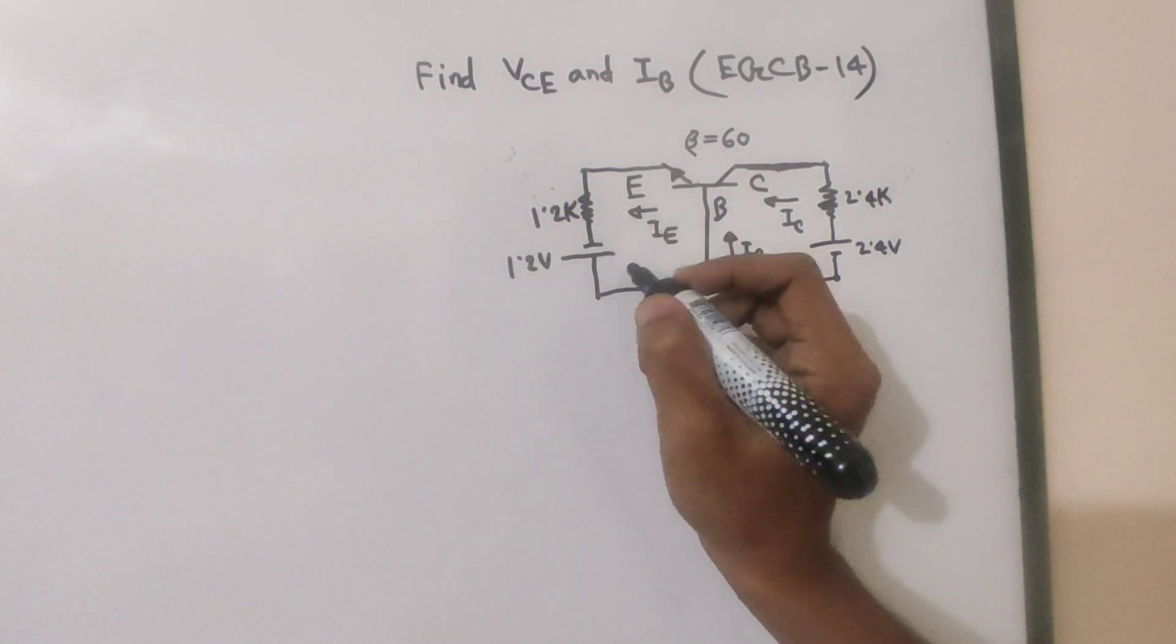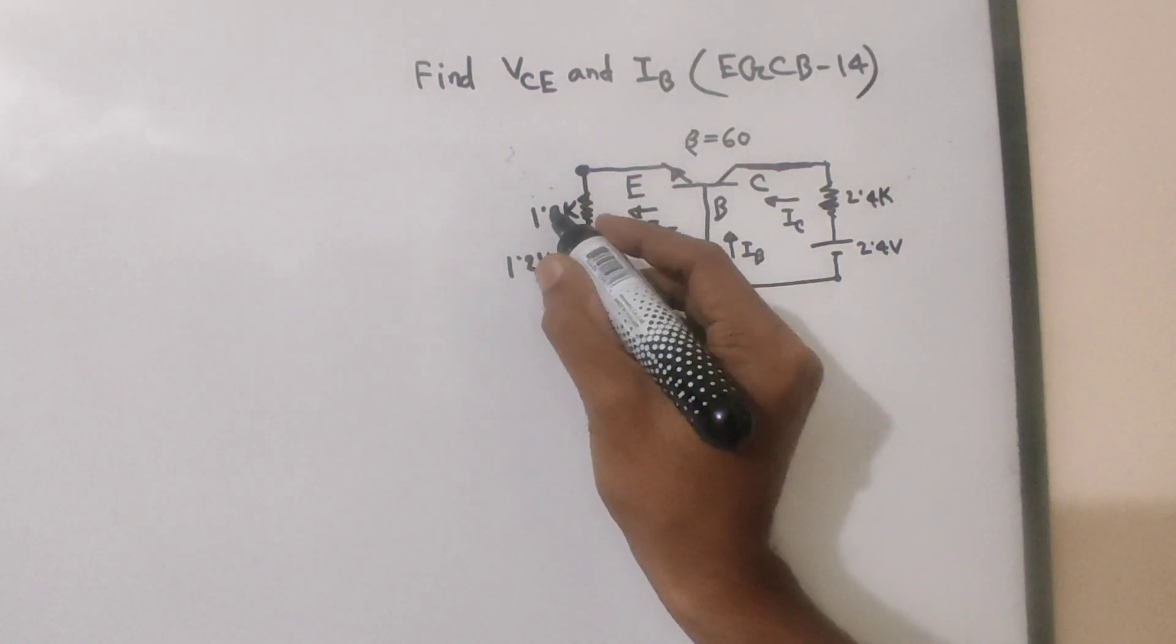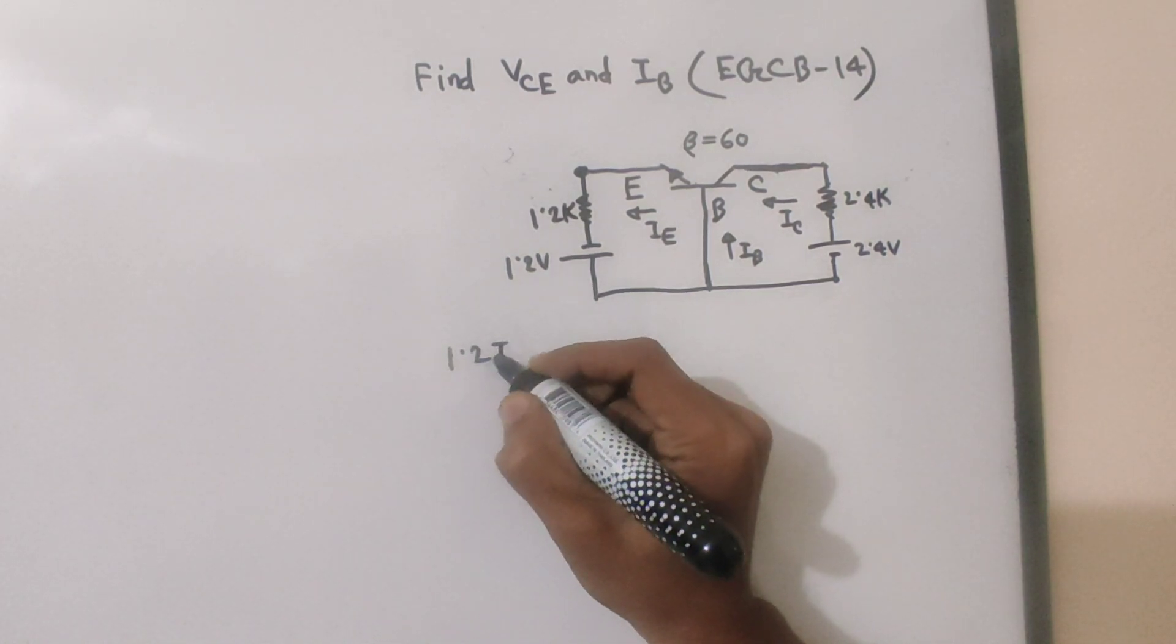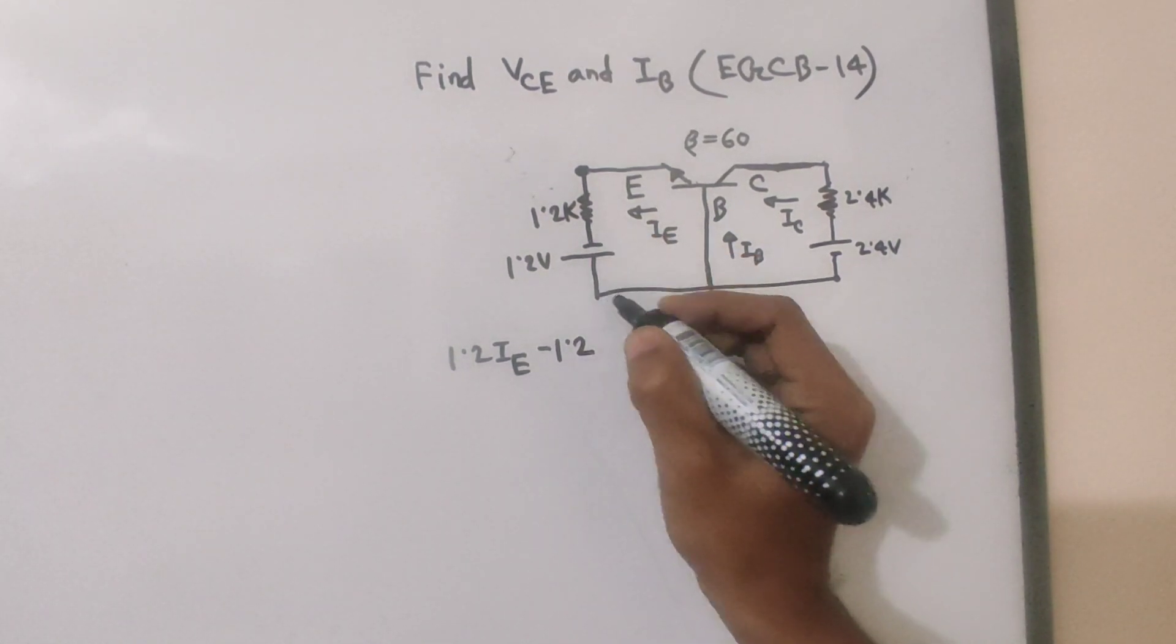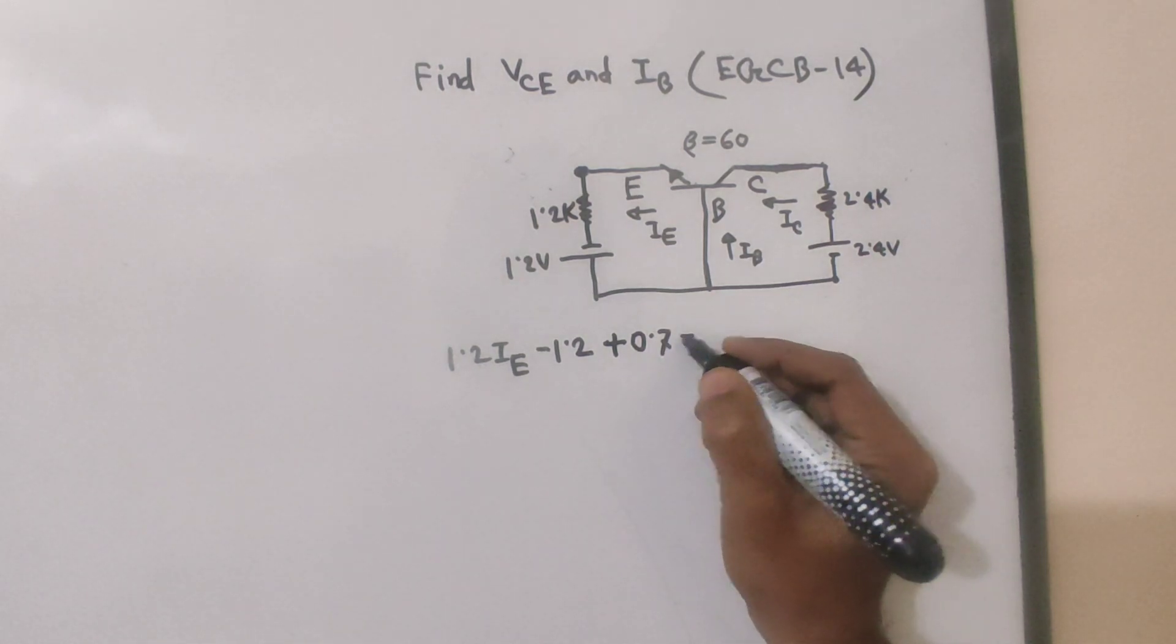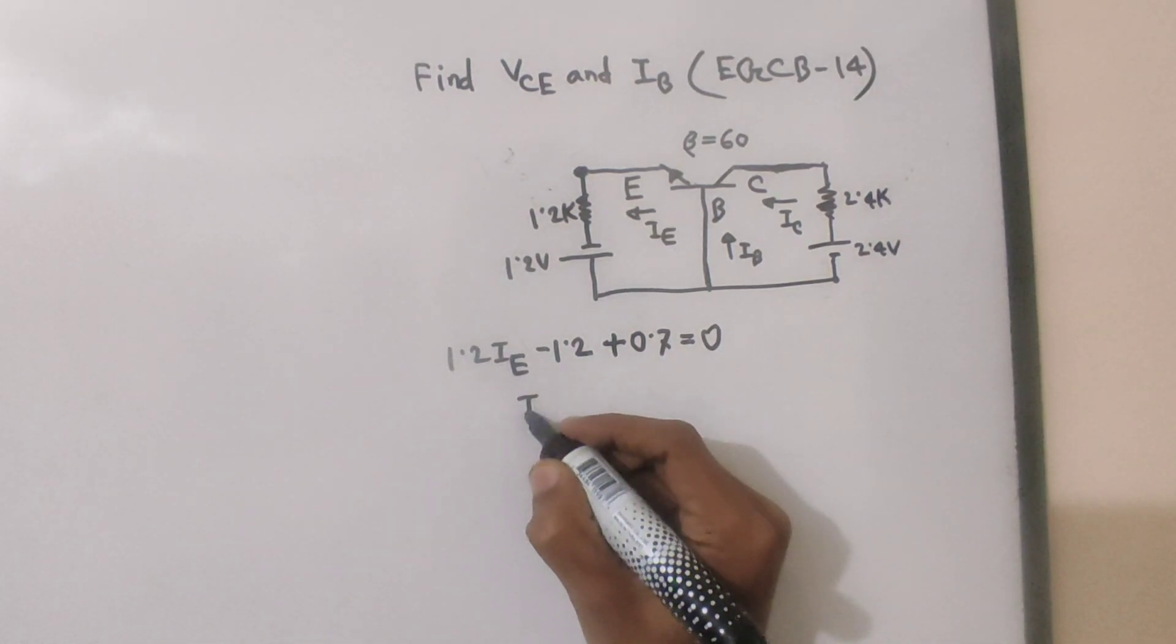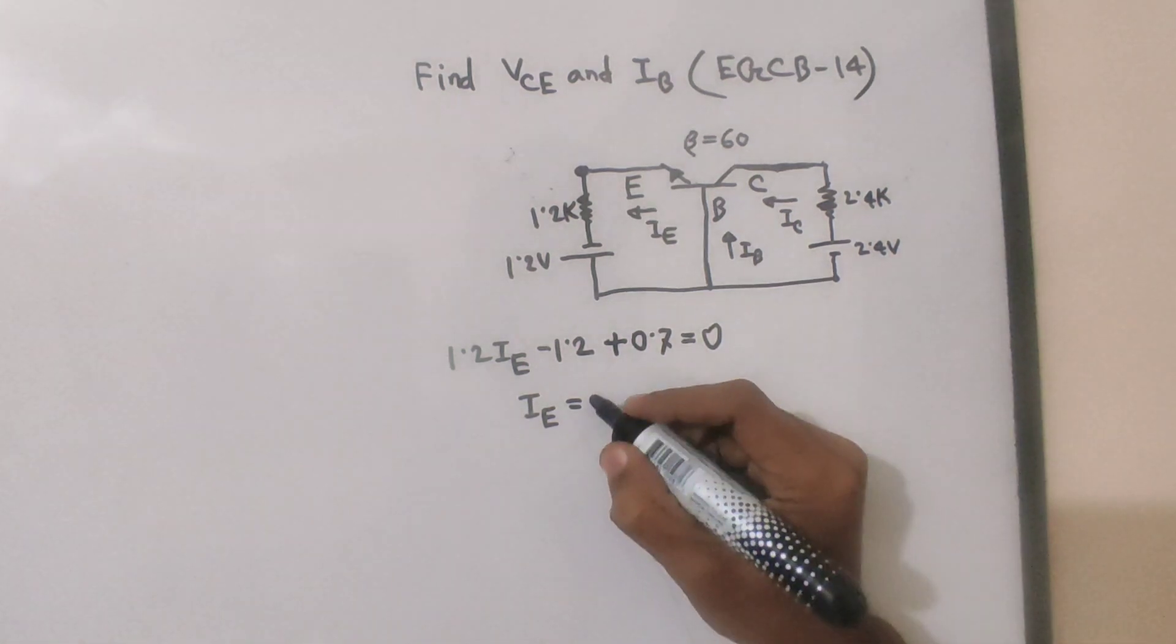In the circuit, applying KVL we get: 1.2 into IE minus 1.2 plus 0.7 is equal to 0. Solving this condition, the IE current value comes out to be 1.2 minus 0.7, which equals 0.4167 milliampere.